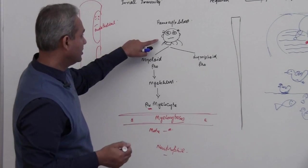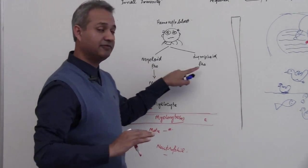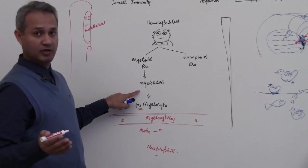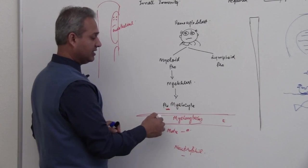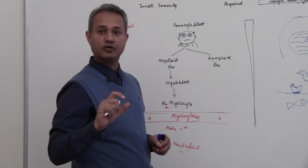So we have hemocytoblast which has given rise to myeloid progenitor and lymphoid progenitor. Then from myeloid progenitor we got the myeloblast. Myeloblast then gave us promyelocyte which is committed to make the granulocytes.